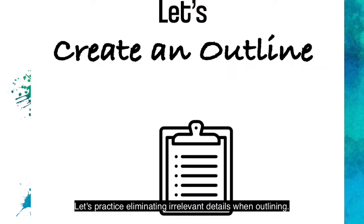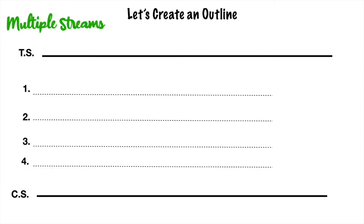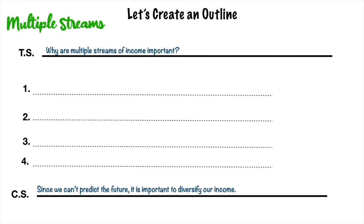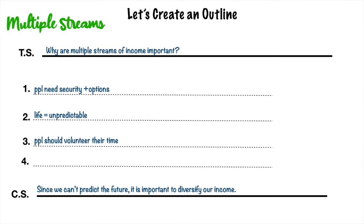Now let's practice eliminating irrelevant details when outlining. We're going to create an outline using the topic multiple streams of income. Our topic sentence is: why are multiple streams of income important? And our concluding sentence is: since we can't predict the future, it is important to diversify our income. Quick note — when writing outlines we don't have to use complete sentences; it's a guide. Some details: people need security and options, life is unpredictable, people should volunteer their time, Rashad Bilal says make money work for you.